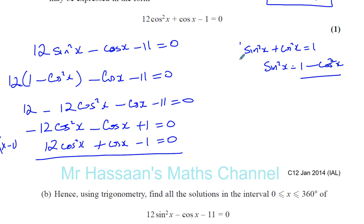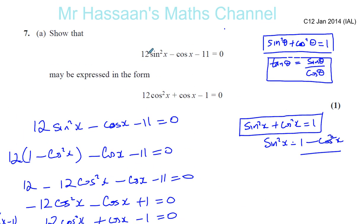The key was to replace sine squared x with 1 minus cosine squared x — an identity you won't be given but must know. Even if the question just said solve the equation without telling you to express it in this form, you should know that you need to make the trig ratios the same. It's easy to convert sine squared into cosine squared using this identity — just replace it with 1 minus cosine squared.